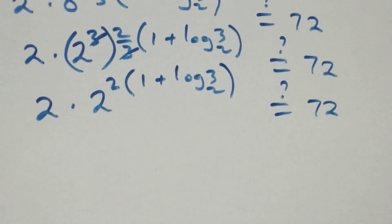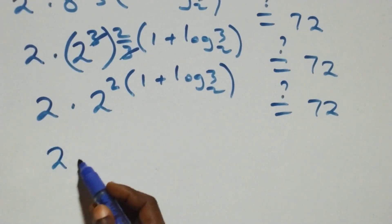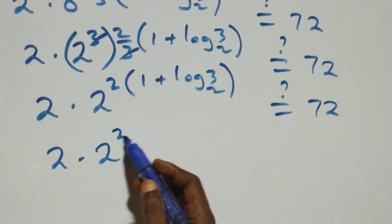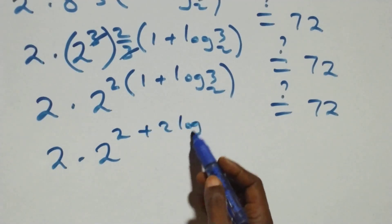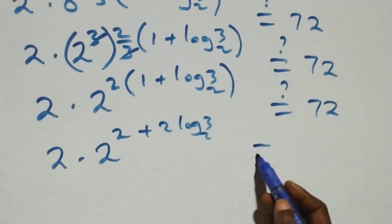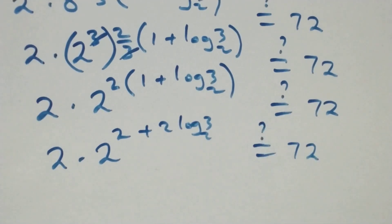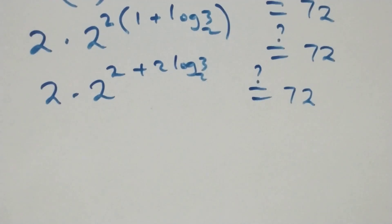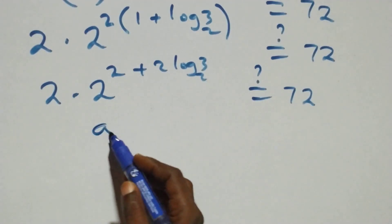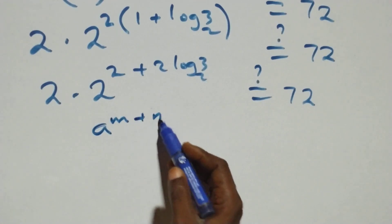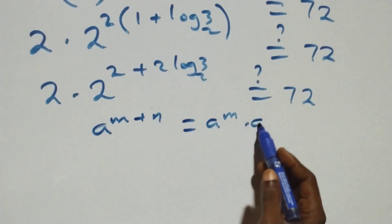Using the law of indices — a raised to power (n plus n) equals a raised to power n times a raised to power n — we apply this here. Also applying the law of logarithms: a raised to power log b to base a equals b.